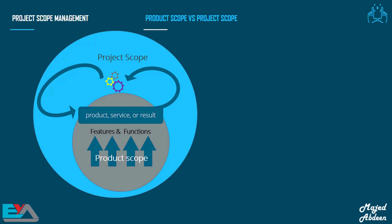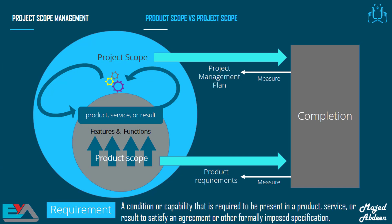Remember, when we talk about scoping out a project, we mean figuring out all the work that needs to be done to make the product. As a Project Manager, this is a big part of what you have to be concerned with — the actual work that the team has to do. Another difference is that we measure completion of the Project Scope against the Project Management Plan, but the completion of the Product Scope is measured against the Product Requirements. Product Requirements includes things like software, technical attributes, security, user documentation, training, performance requirements, etc.